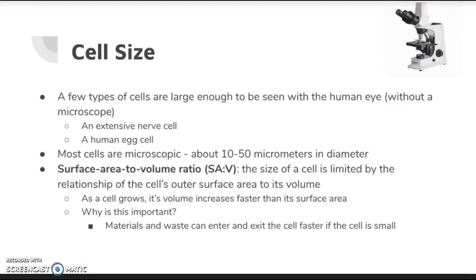There are a few types of cells large enough to see with the human eye — an extensive nerve cell or a human egg cell — but most cells are microscopic. The size of a cell is limited by the relationship of the cell's outer surface area to its volume, called the surface area to volume ratio. As a cell grows, its volume increases faster than its surface area, which is important for cell processes and how materials enter and exit the cell.